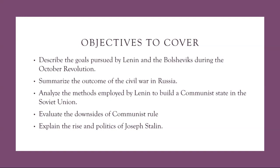Finally, we're going to be explaining the rise and politics of Joseph Stalin. After Lenin's death in 1924, Joseph Stalin emerged as the leader of the Soviet Union, consolidating power through a ruthless campaign of political purges and repression. Stalin implemented policies of rapid industrialization and collectivization, known as the Five-Year Plans, to modernize the Soviet economy and strengthen communist control. His cult of personality and authoritarian rule transformed the Soviet Union into a totalitarian state, characterized by fear, propaganda, and arbitrary rule.